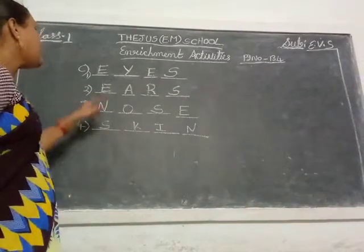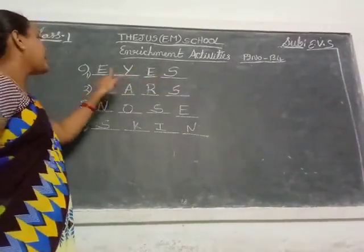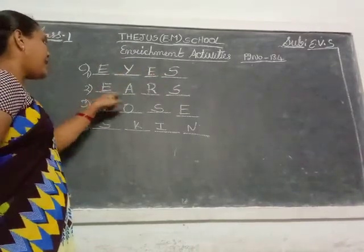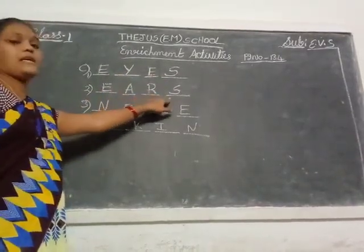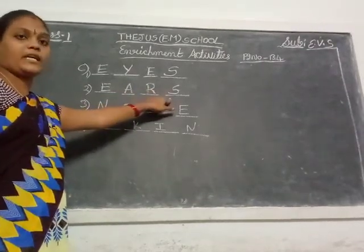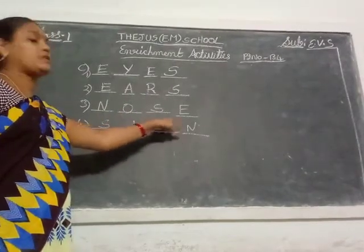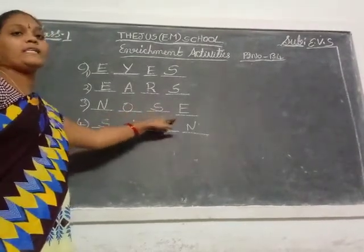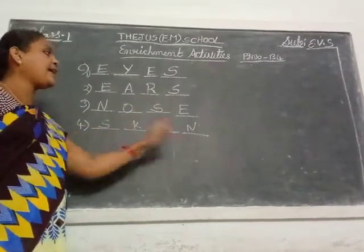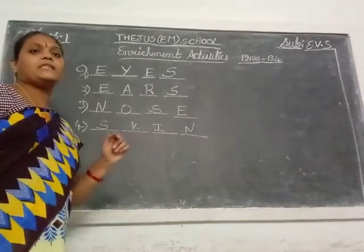Say the spelling: E-Y-E-S — eyes. E-A-R-S — ears. N-O-S-E — nose. S-K-I-N — skin.